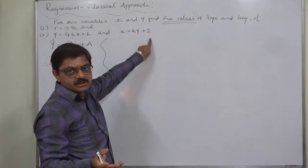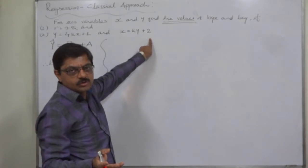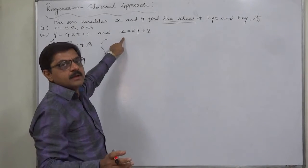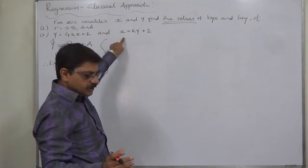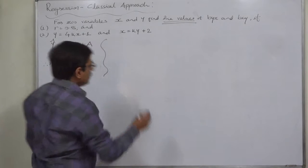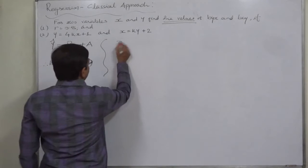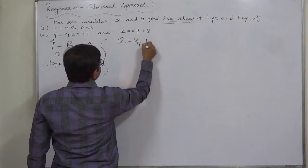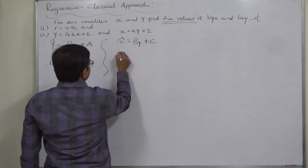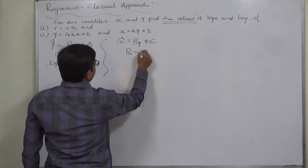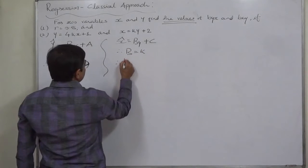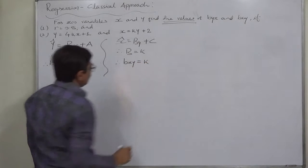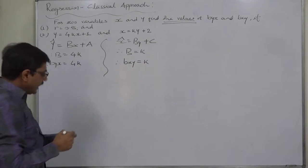Similarly, x = ky + 2 — since x is the subject of the equation, this is the line of regression of x on y. Comparing it with the standard form x = by + c, we get b = k, and in this line b stands for bxy, so bxy = k.